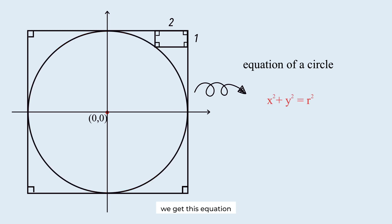We get this equation by applying the Pythagorean theorem to any point x comma y on the circle. However, this circle passes through this point. We can determine the coordinates of this point: r minus 2 comma r minus 1.